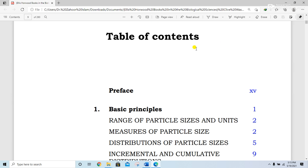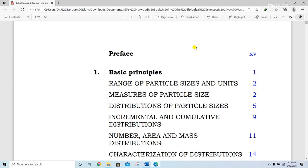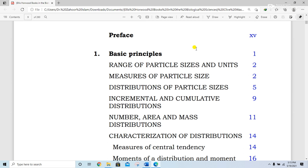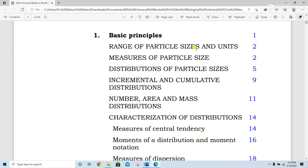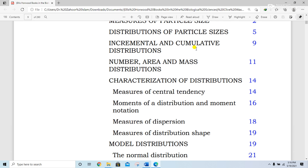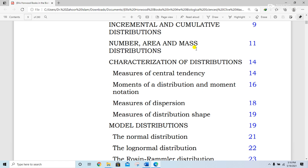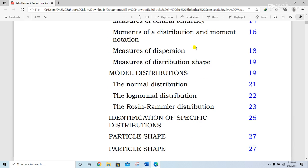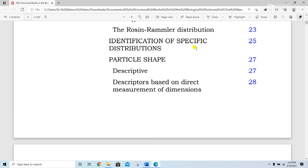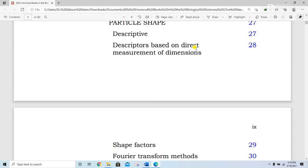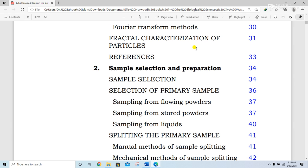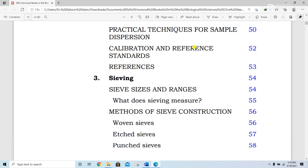Now look at the table of contents. You can see the preface, the basic principles, range of particle size and units, measurement of particle size, distribution of particle size, incremental and cumulative distribution, number area and mass distribution, characterization of distributions, measures of central tendency, moment of distribution and moment notations, measure of dispersions, measure of distribution shape, model distributions including the normal distribution and log-normals, then particle shapes, identification of specific distributions, and sample selection and preparation. This is the table of contents.